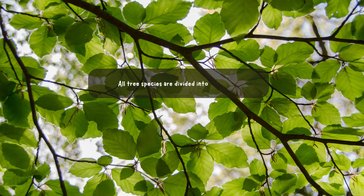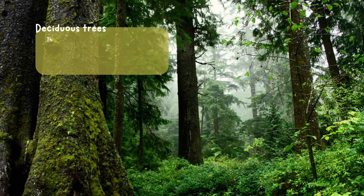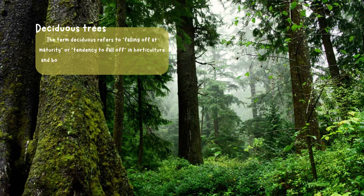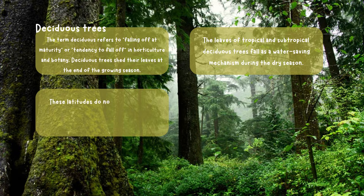All tree species are divided into two groups: deciduous and evergreen. In horticulture and botany, the term deciduous refers to falling off at maturity or a tendency to fall off. Deciduous trees shed their leaves at the end of the growing season. The leaves of tropical and subtropical deciduous trees fall as a water-saving mechanism during the dry season. These latitudes do not have the same reduction in daylight hours as temperate deciduous trees.